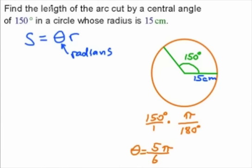Alright, so come back up here, plug in what we know. So we're going to get s is equal to 5 pi over 6 for theta, and the radius is 15 centimeters.